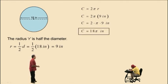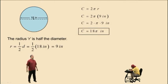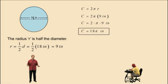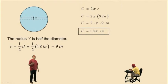It's not 18 inches — it's 18 times pi inches. You can replace pi with its decimal approximation of 3.14 and perform the multiplication, but we're going to leave pi in our final answers.